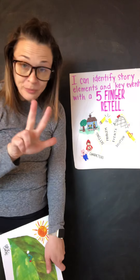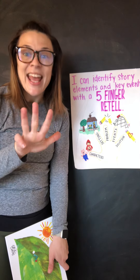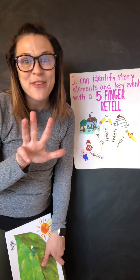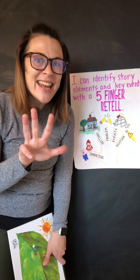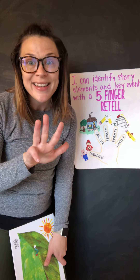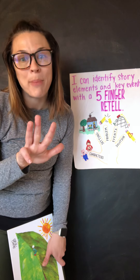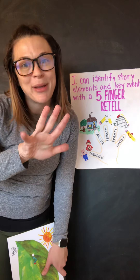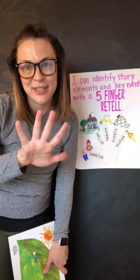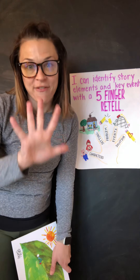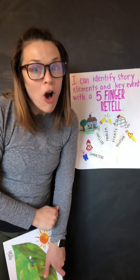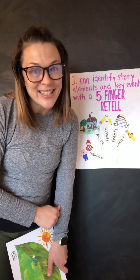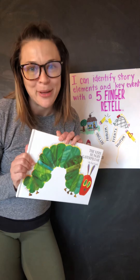The events: at the beginning there's an egg on a leaf; in the middle there's a growing caterpillar eating lots of food; then he builds a cocoon; and at the end he emerges as a beautiful butterfly — and that's also the solution. The caterpillar eats lots of things and grows into a butterfly. That's how we use the five-finger retell for The Very Hungry Caterpillar by Eric Carle.